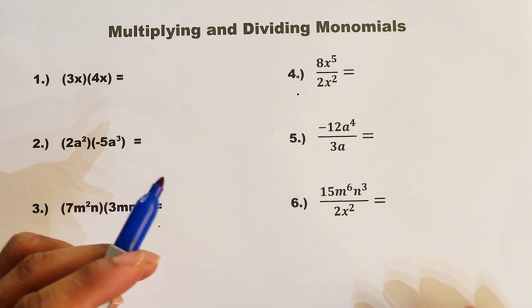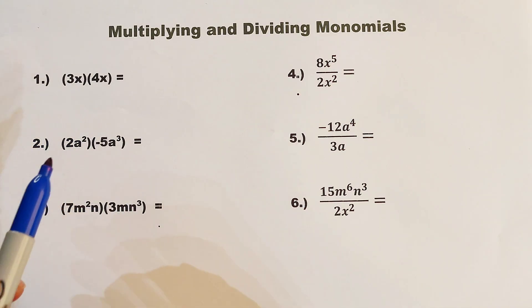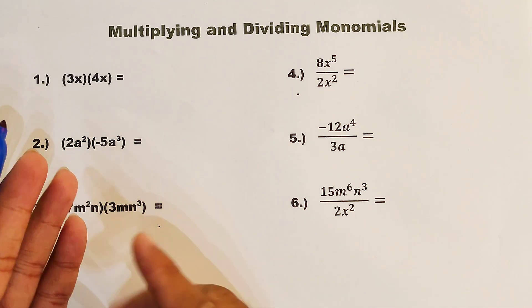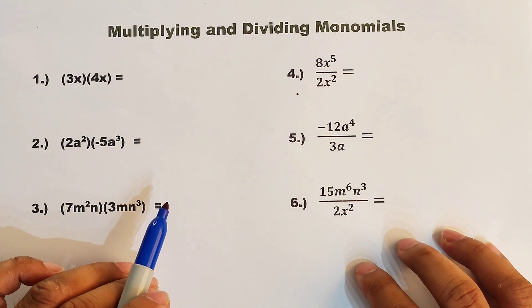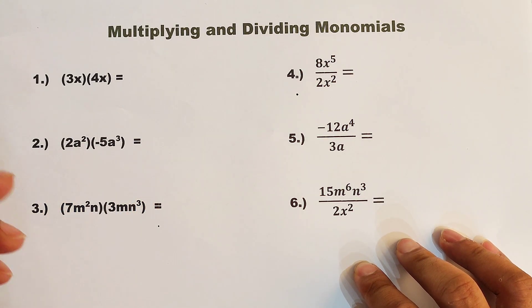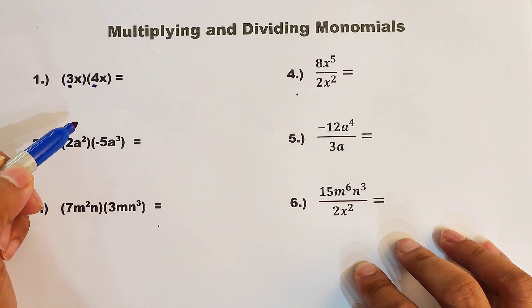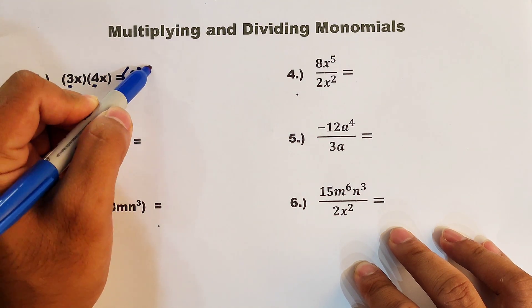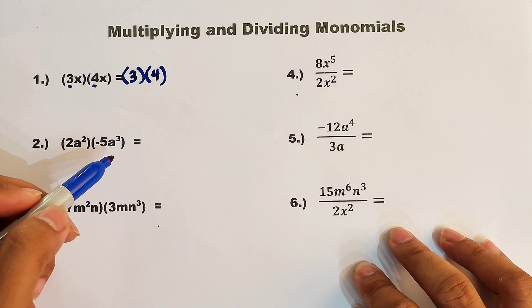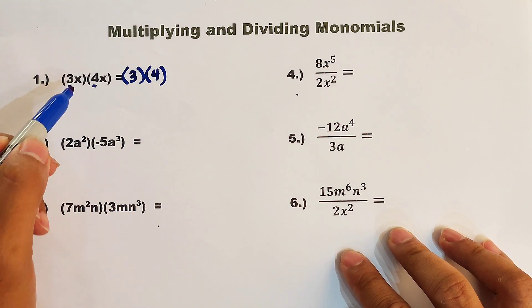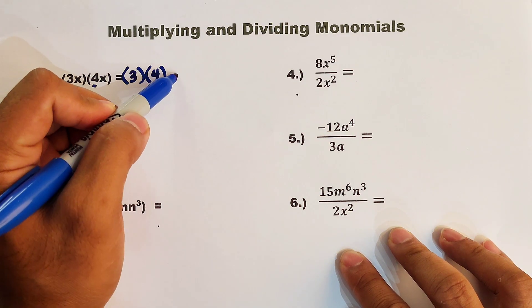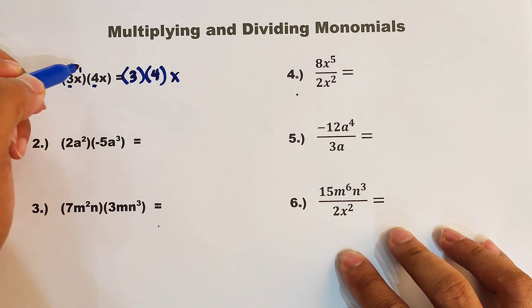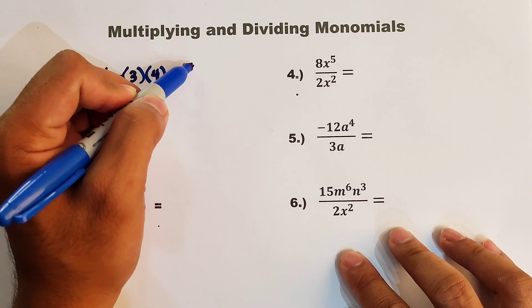Let's start with item number 1. In number 1, we are given 3x times 4x. So how are we going to multiply these two monomials? Let me show you first the step-by-step process. First, we will multiply the coefficients or the numbers. We have 3 times 4. And now for the variable, since they are the same variable, we will copy the variable x and then we will add the exponents. Here we have 1 and 1, that would be 1 plus 1.